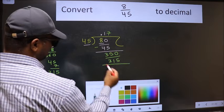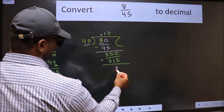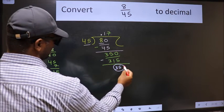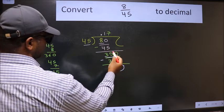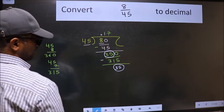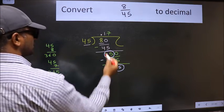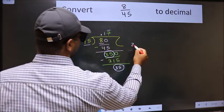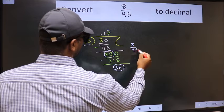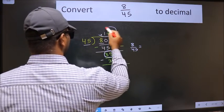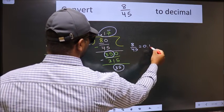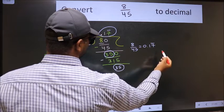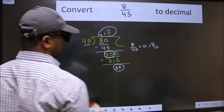Now we should subtract. We get 35. We got 35 again. Earlier also we got 35. That means we get bar on this number. Therefore, decimal of 8 by 45 is this one: 0.17 with bar on this number. That is our answer.